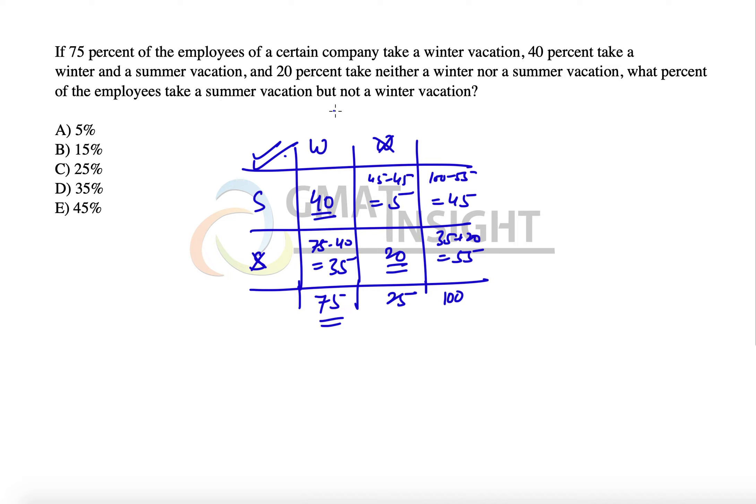What percent of the employees take summer vacation but not a winter vacation? Summer but not winter is 5, and that is 5%, which means the answer is option A. I hope you enjoyed the explanation, thank you so much.